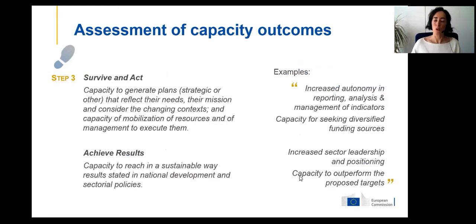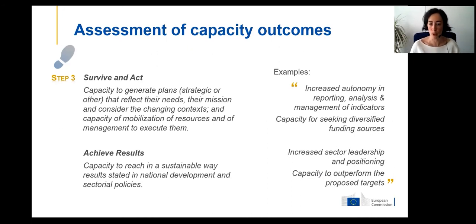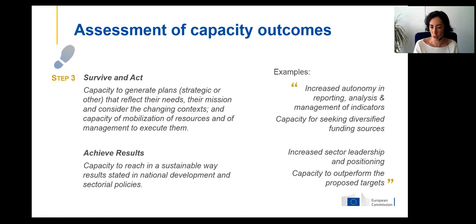The third typology of capacity outcome is the capacity to network — to act in a coordinated and efficient manner as part of a larger network of stakeholders, including the capacity to share knowledge. The fourth is the capacity to self-renew: to adapt to a change in environment or available resources. This typology requires a reflective act — a new definition of an adaptation strategy — not just de facto adaptation without deliberate reconception.